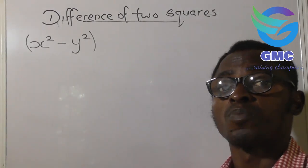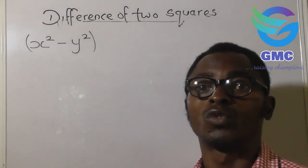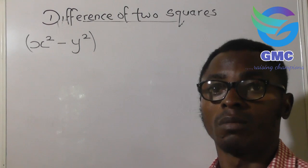This is difference of two squares. For an expression to be termed difference of two squares, the following conditions must be met.